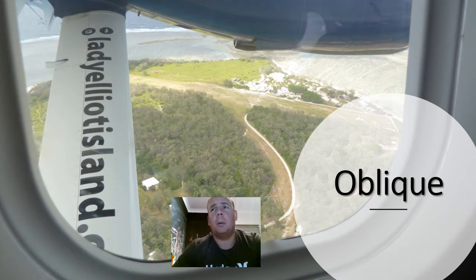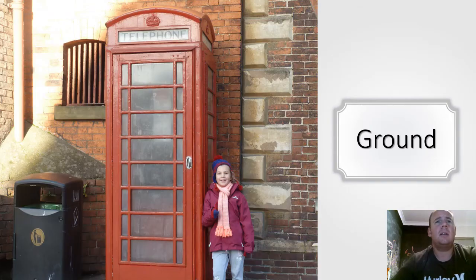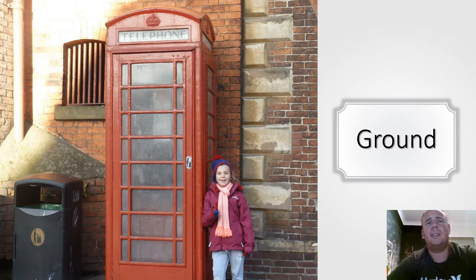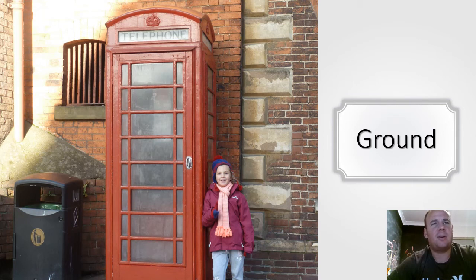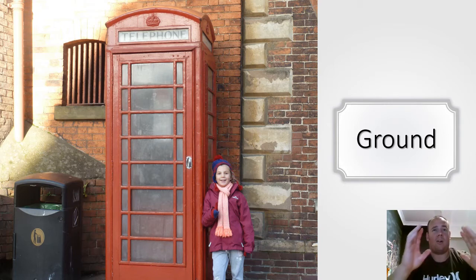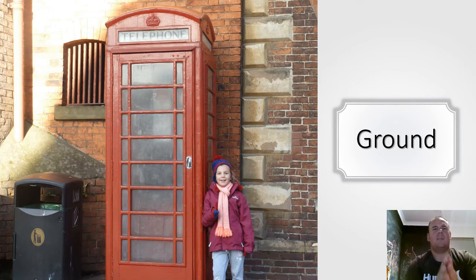The next one is the ground-level photograph. This is probably the most common — these are the ones you take yourself with friends. As you can see, when you go on a holiday, this is my daughter in Lincoln outside the first red telephone box. It's ground because I'm standing on the ground taking that photograph.